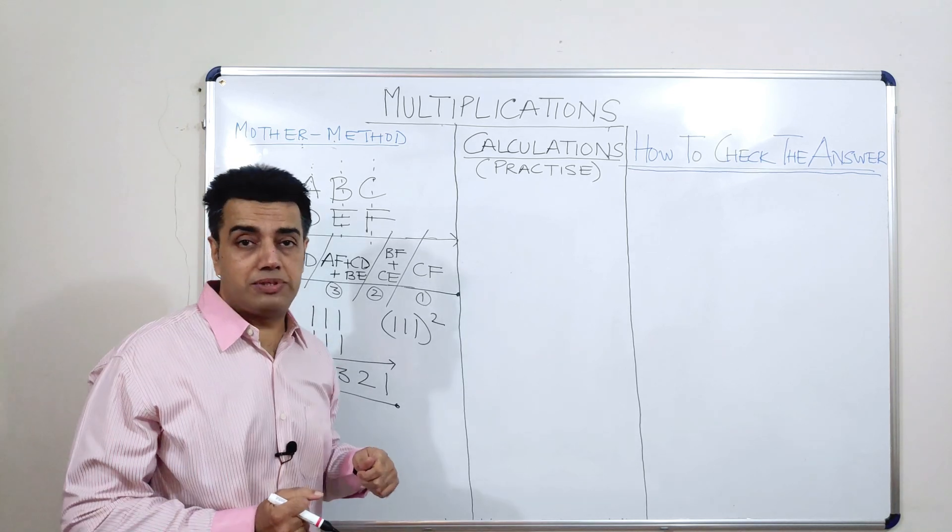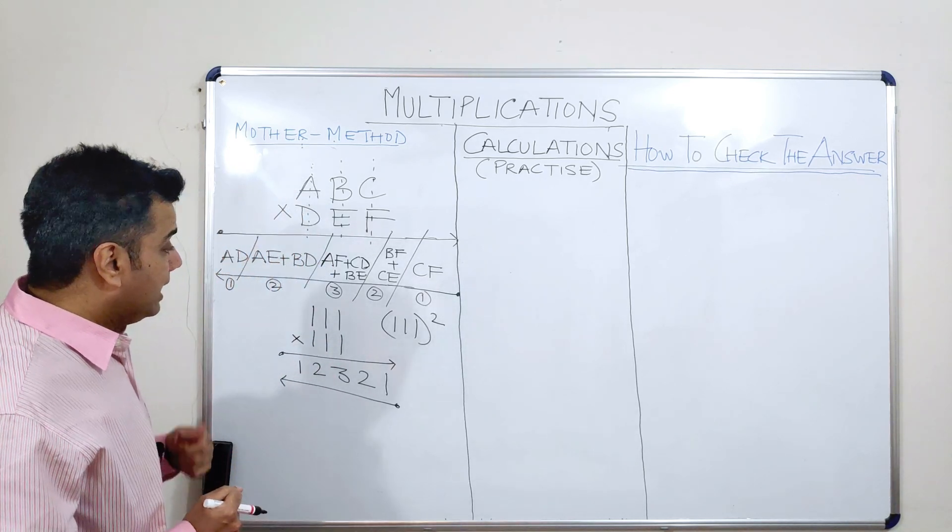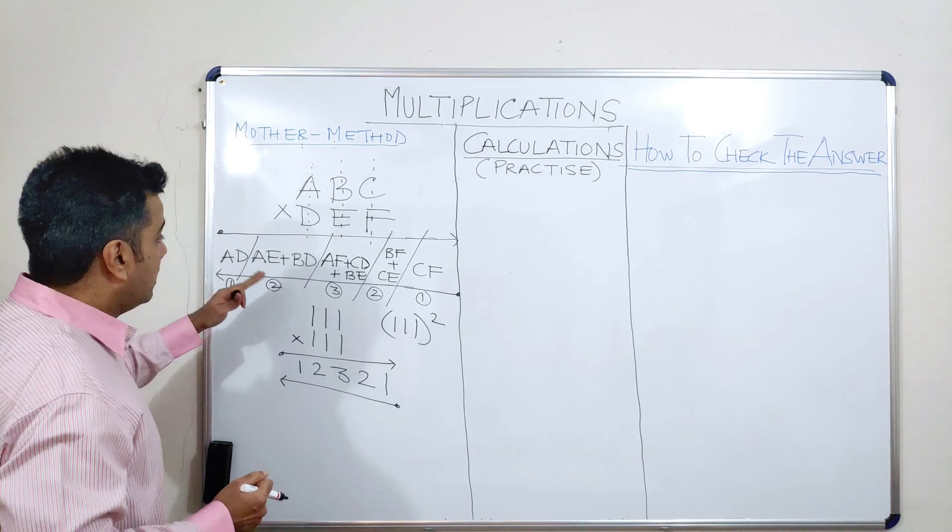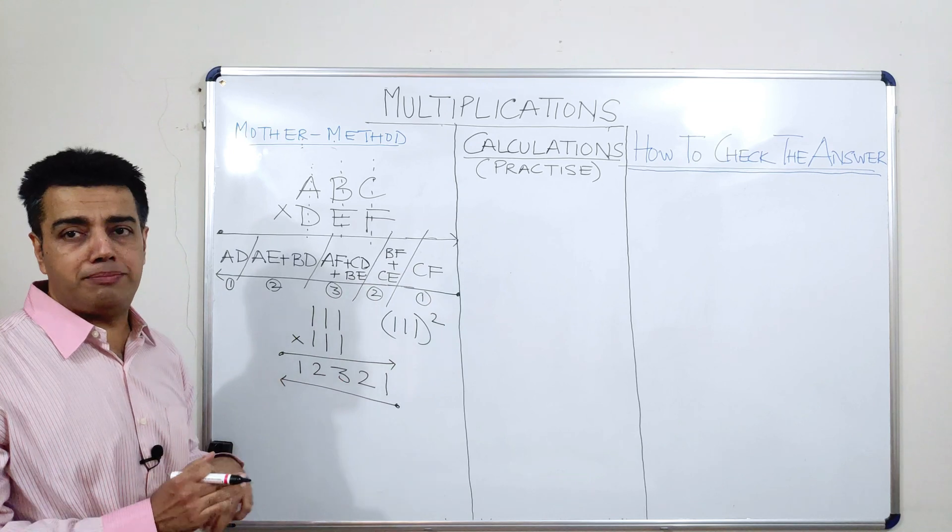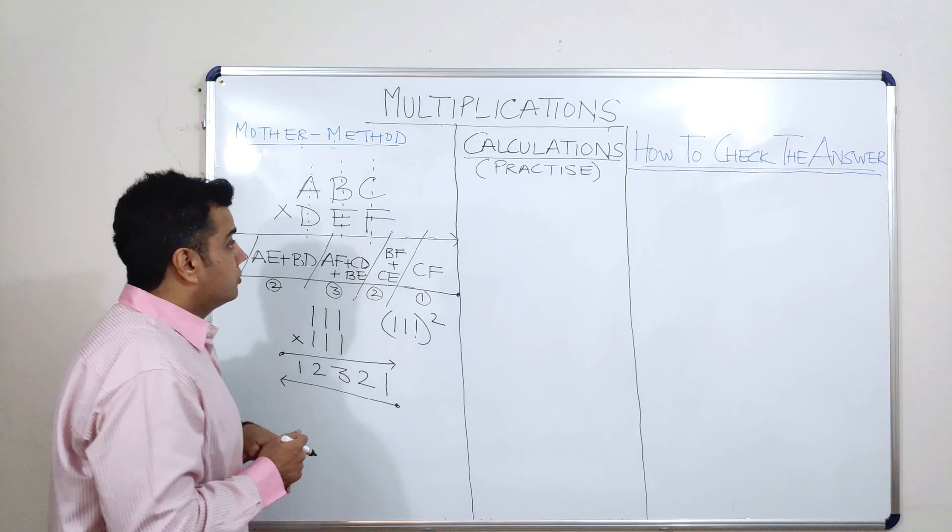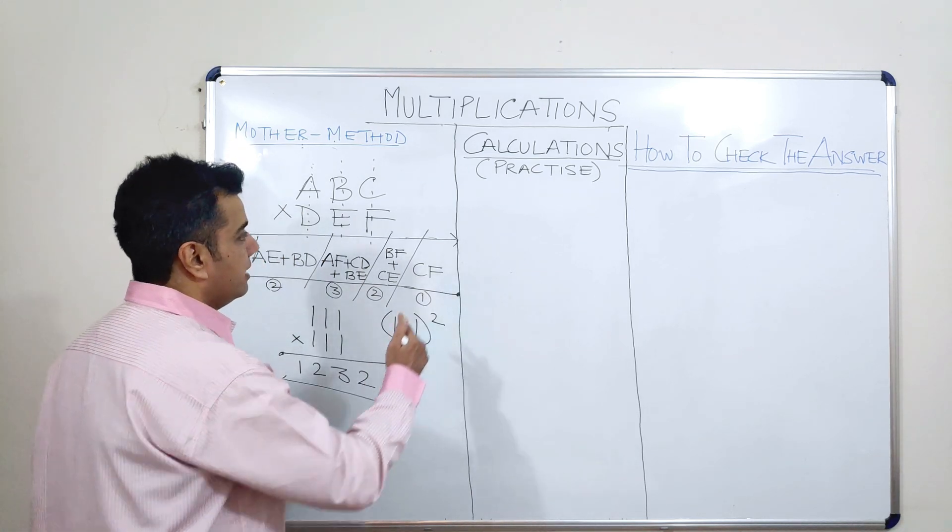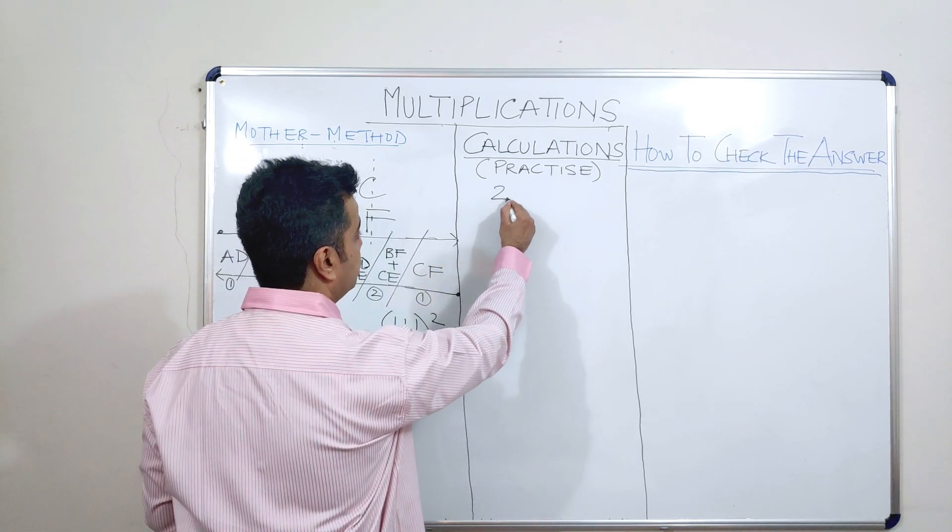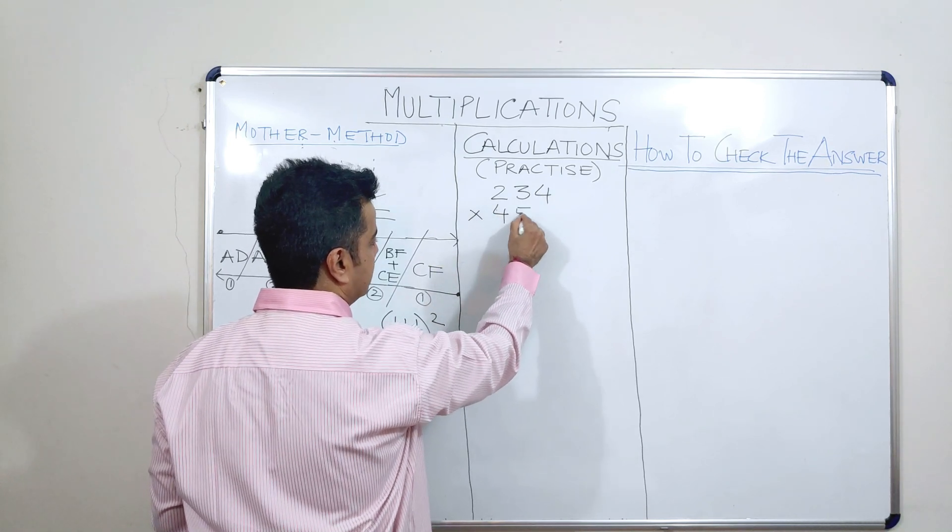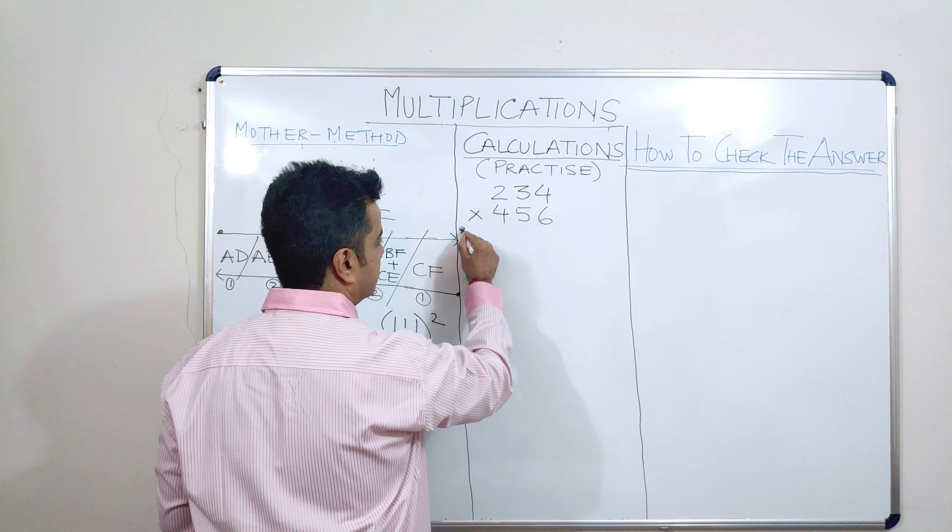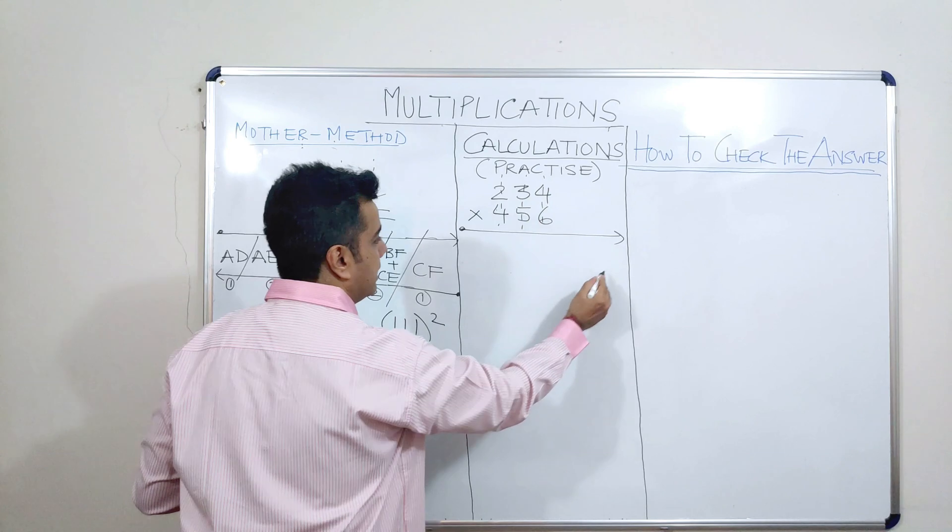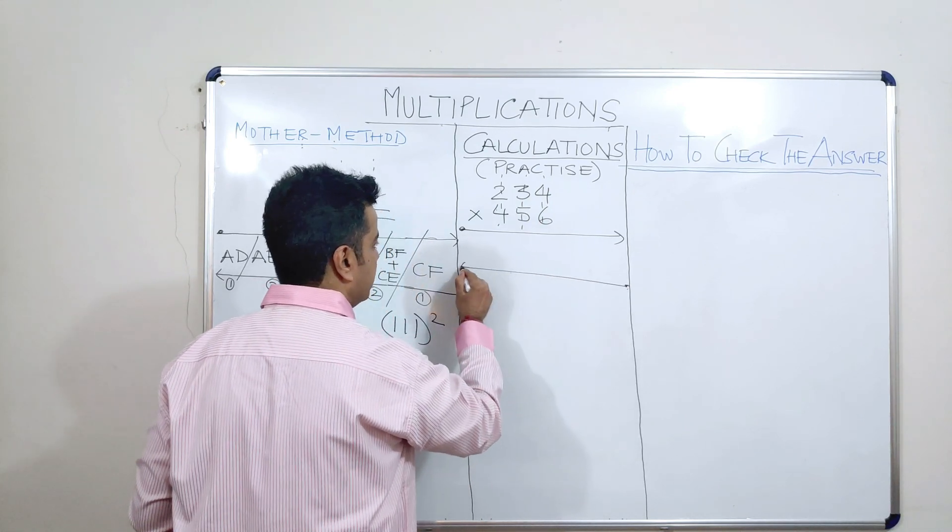Let us take some more examples here. While I am taking more examples here, the focus would be to learn how to apply the mother method. So, let me take an example like if I had to multiply 234 with 456. I will assume that I have drawn 3 columns here. And how do I go ahead? First, I will take only 1 column.